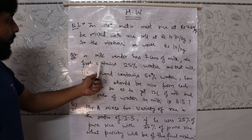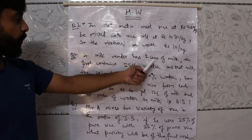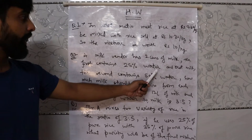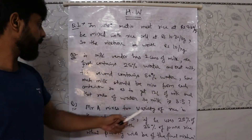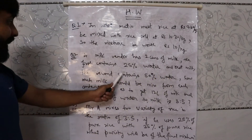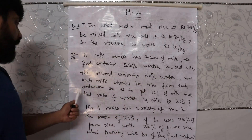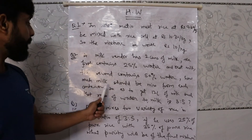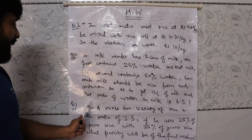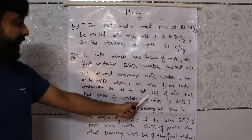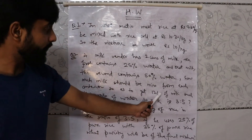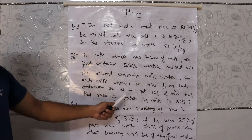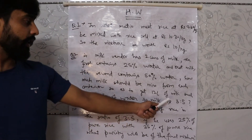Second question says: A milk vendor has 2 cans of milk. The first contains 25% water and the rest milk. The second contains 50% water and the rest milk. How much milk should be mixed from each container so as to get 12 liters of milk such that the ratio of water to milk is 3 to 5?